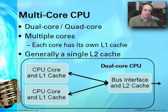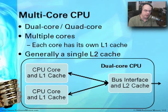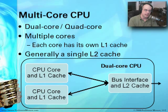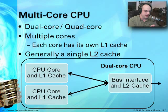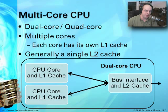The latest CPU technologies use multiple cores — dual core, quad core, and systems with even more cores per CPU. Each core has its own ability to perform operations and calculations, so the more CPU cores you have, the more independent operations can take place simultaneously. Each core generally has its own L1 cache, and generally the L2 cache is shared by all of the different cores in a system.